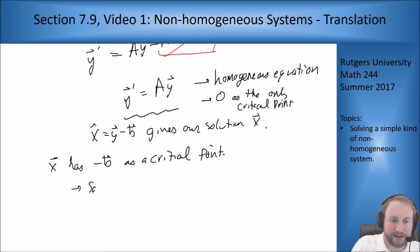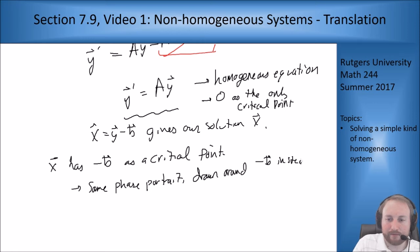Basically all I'm doing is I'm taking the phase portrait for y around zero and shifting it down to minus b. So same phase portrait drawn around minus b instead of zero. If the g vector is a constant vector it's just a shift, so it puts the equilibrium point somewhere else instead of being at zero.